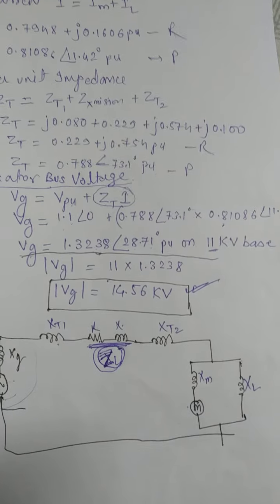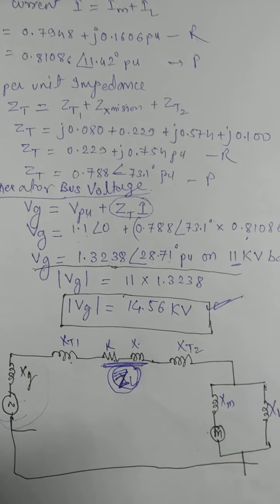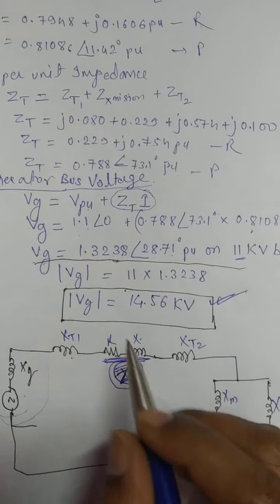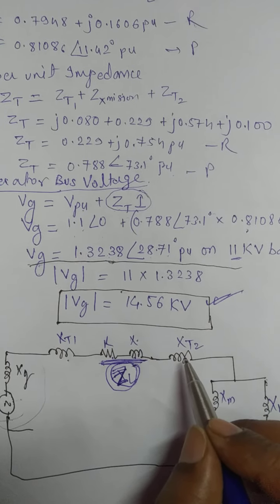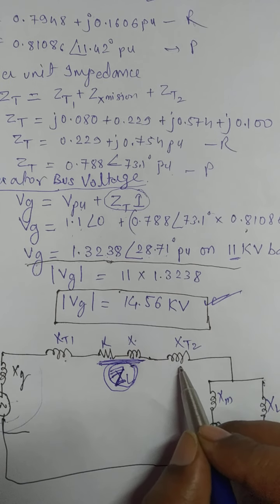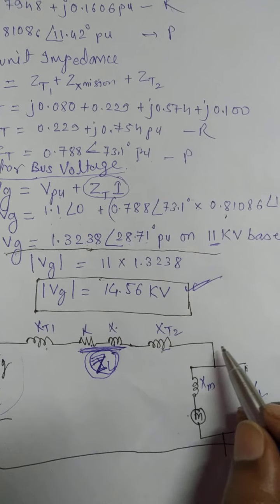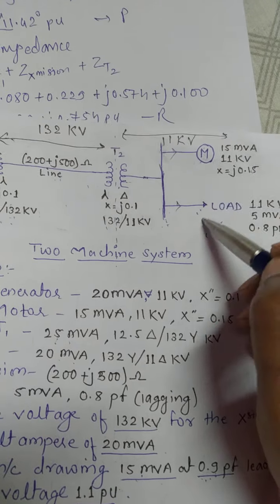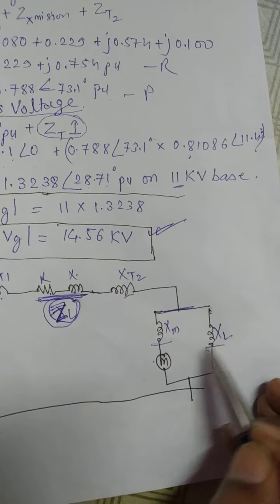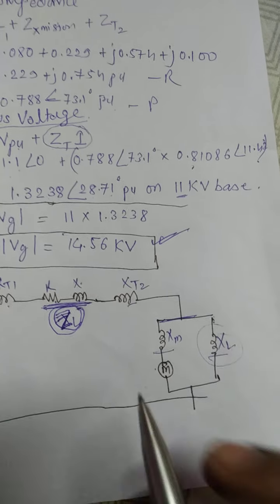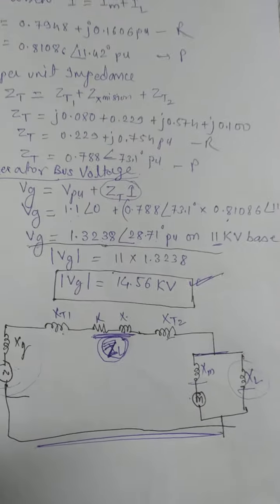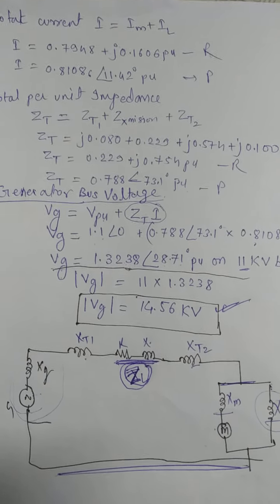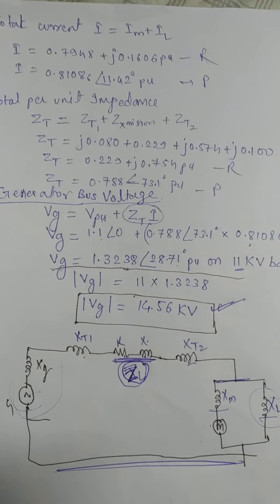When calculating Z across the transmission line you get R and X, so in the reactance diagram you show both resistance and reactance for the transmission line. Then there is the reactance of transformer T2, followed by a bus with two parallel branches — one is the motor reactance and one is the load impedance, which you already calculated. This completes the reactance diagram for this numerical on generator bus voltage.